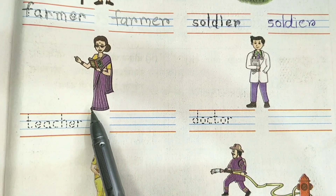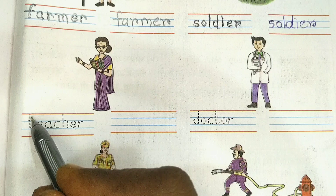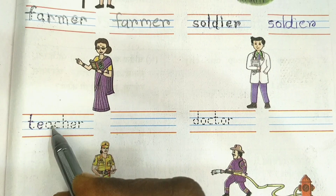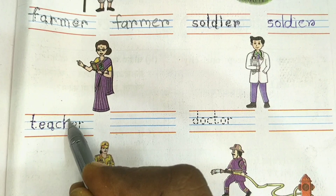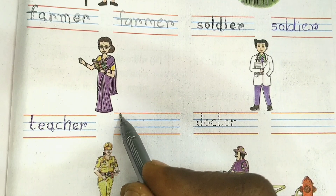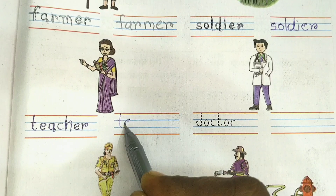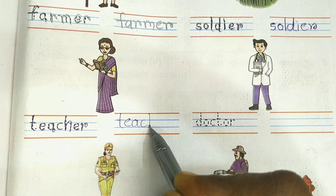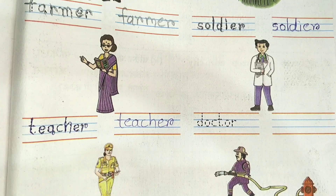This is a picture of a teacher. So first we will trace the word teacher. T-E-A-C-H-E-R. Now write the word teacher. T-E-A-C-H-E-R. Teacher.